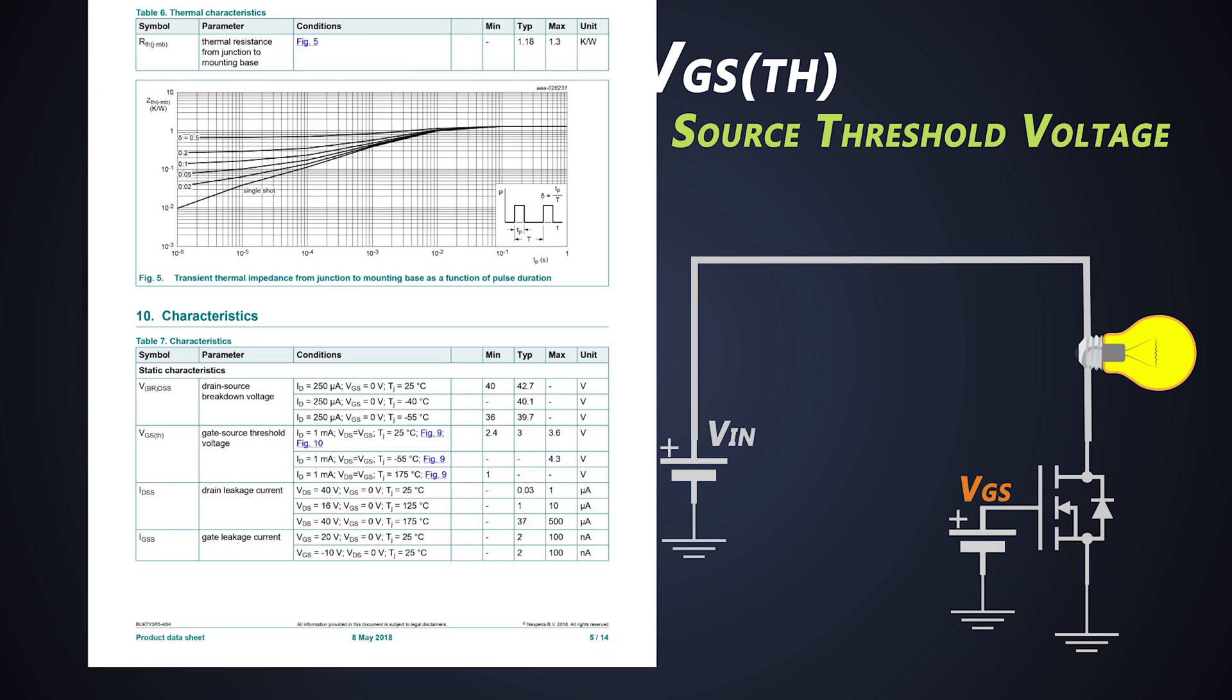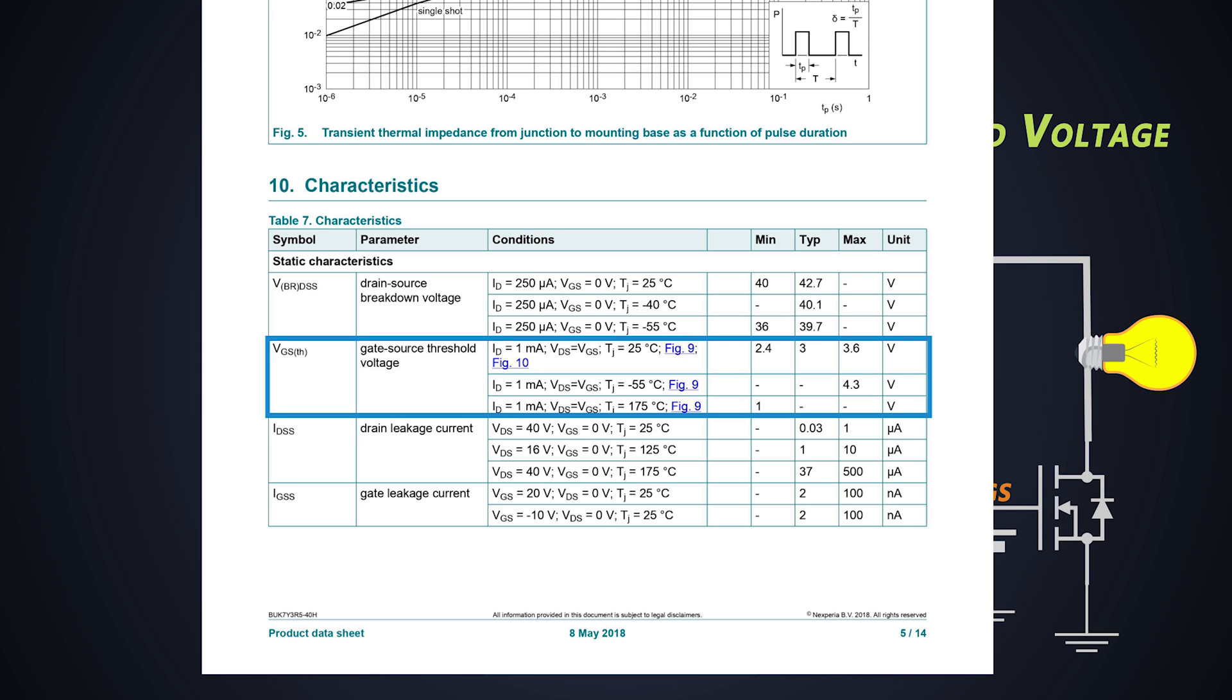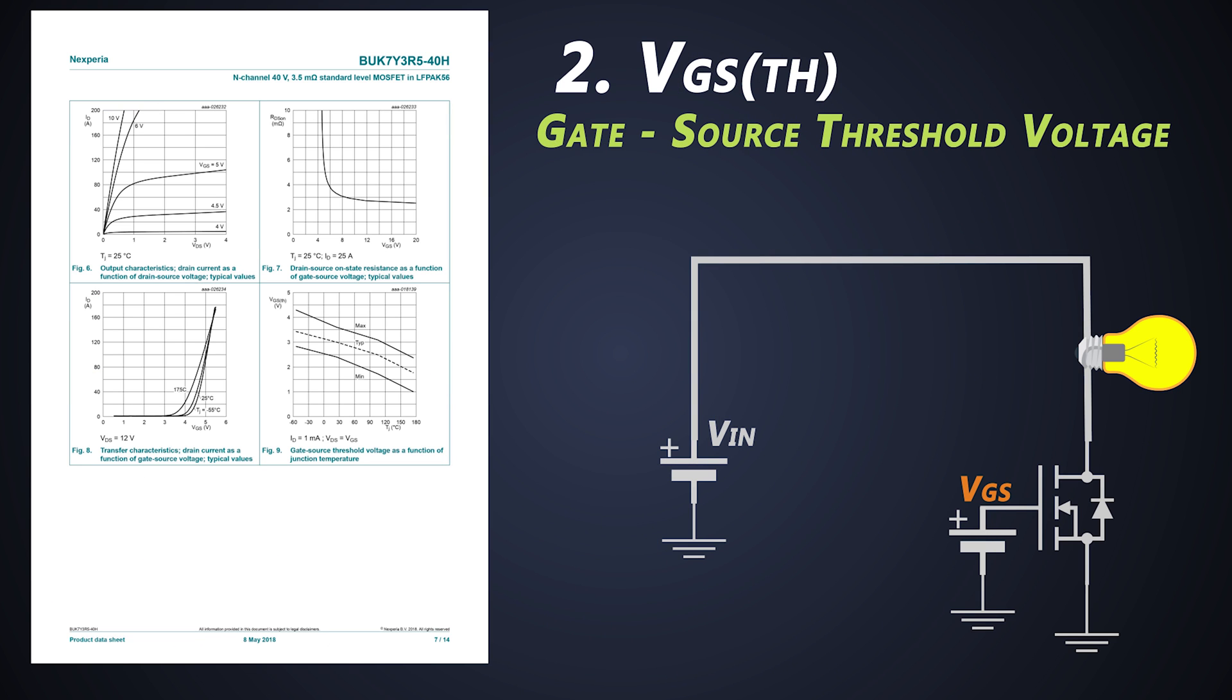For this MOSFET, we need at least 3V to turn it on. This VGS depends upon the drain current which has to flow through MOSFET and the VDS.